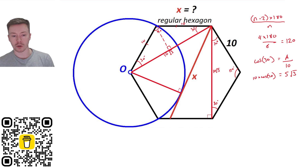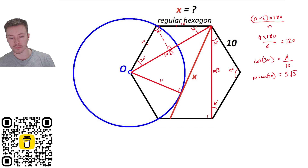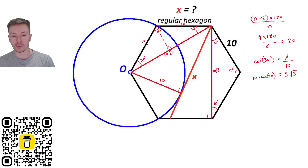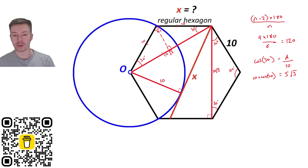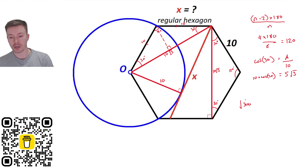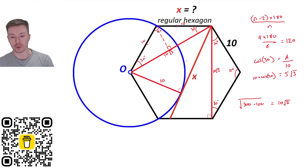This length here is also a radius of the circle, and it equals the side length of the hexagon, so it's 10. Now using Pythagoras: (10√3)² minus 10² gives 300 minus 100 = 200, so the square root of 200 is 10√2. So this side is 10√2.